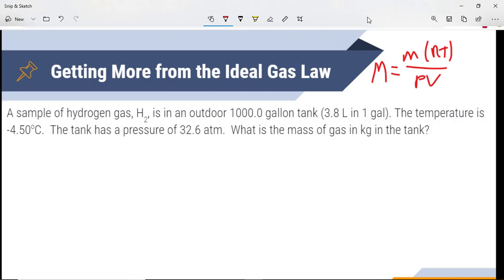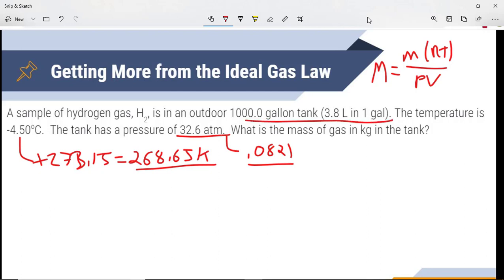So in this instance, we have our temperature here. Remember that needs to go to Kelvin, so we're going to add 273.15. So we get 268.65 for our temperature. We're given a pressure, and since that is our pressure in ATM, we're going to use R as 0.0821. We have a thousand gallon tank. We also know we have 3.8 liters in a gallon, so we're going to take that gallon, and we're going to convert that to liters. So we're going to get 3,800 liters.